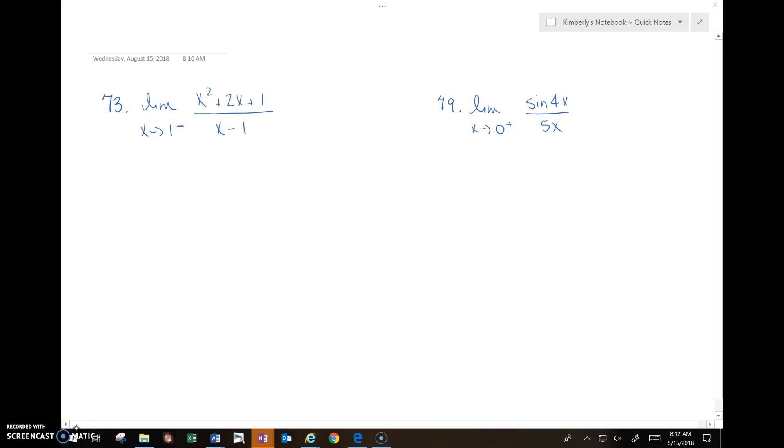Welcome to your first video of the school year where I am going to attempt to explain one-sided limits to you with two examples from your homework: 73 and 79. To me, a one-sided limit can be in two categories.